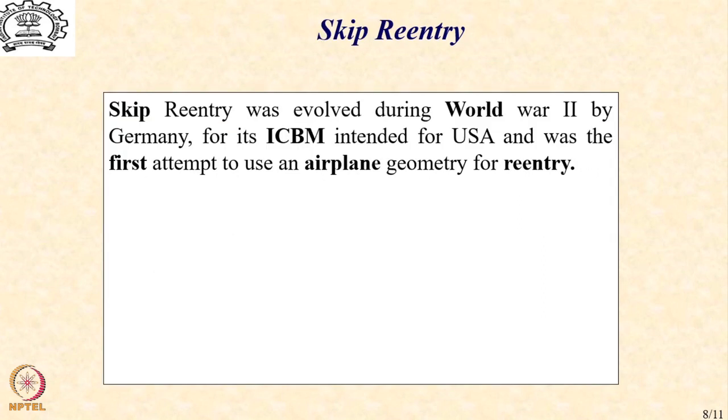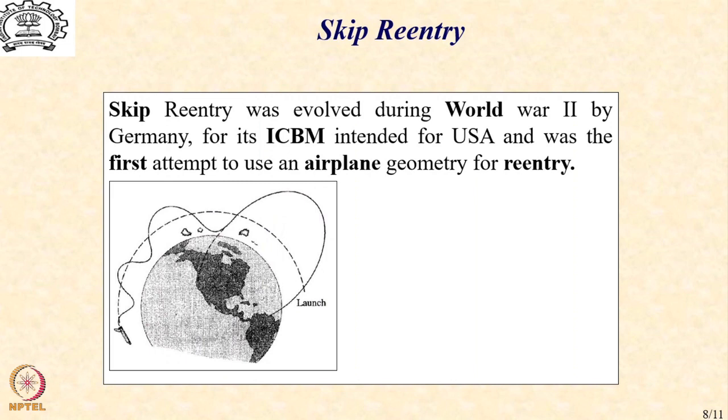If we look at the skip reentry, its history is somewhere around the second world war where Germany evolved this methodology for its ICBMs, the Intercontinental Ballistic Missiles which were intended for USA and this was the first attempt to use an airplane geometry for reentry.